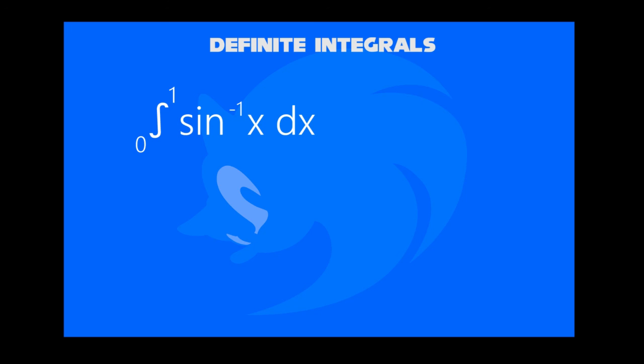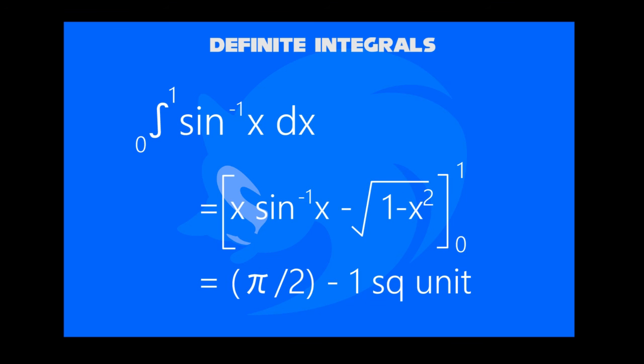Integral of inverse sine x from 0 to 1 is x sine inverse x plus square root 1 minus x squared, from 0 to 1. Or, we get pi by 2 minus 1.